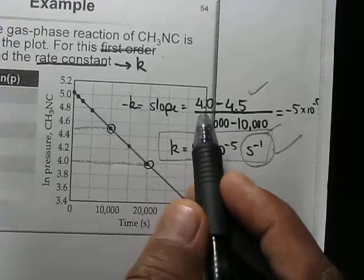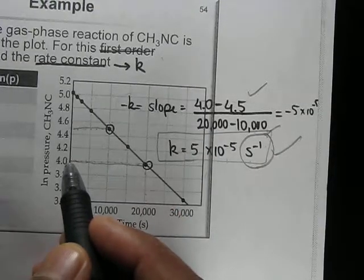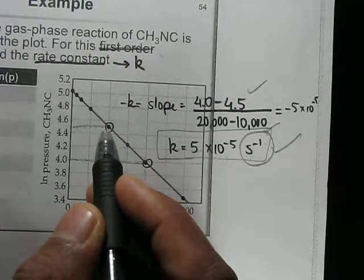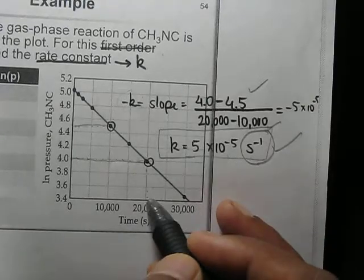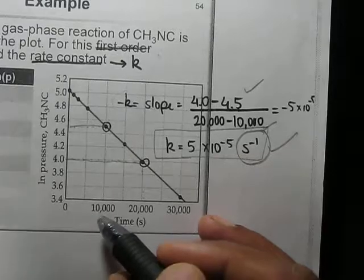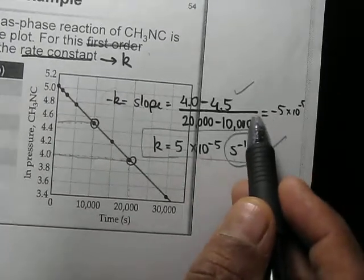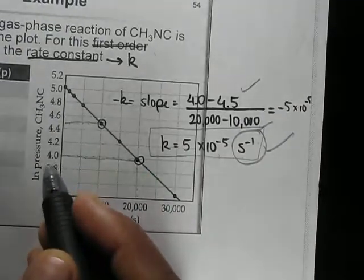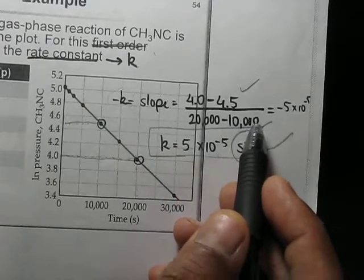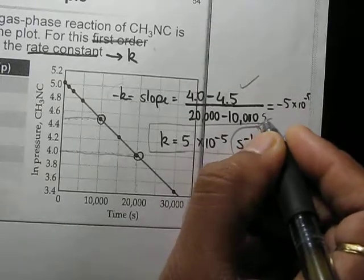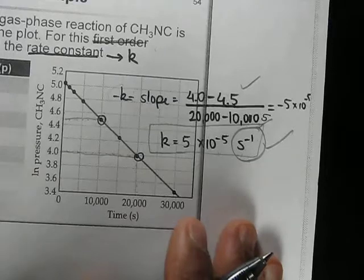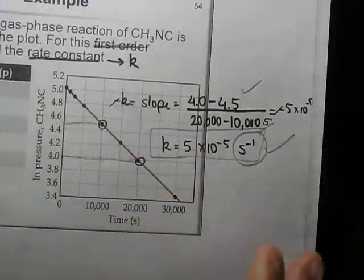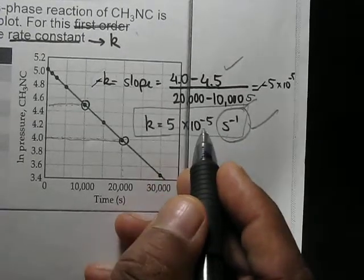We write the slope as: (4.0 − 4.5) divided by (20,000 s − 10,000 s), that is, later concentration minus initial concentration over later time minus initial time. Once you do the math, you get −5×10⁻⁵. These are natural log values and time is in seconds, so the slope is −5×10⁻⁵ s⁻¹. The two negatives cancel, giving k = 5×10⁻⁵ s⁻¹.